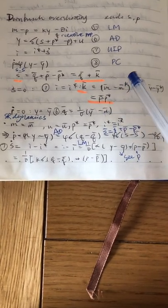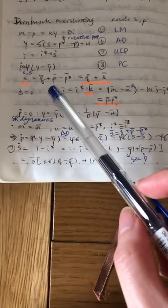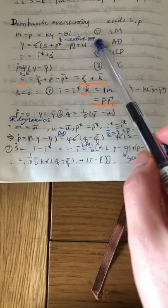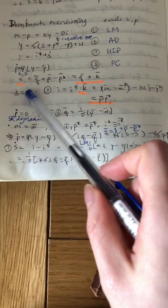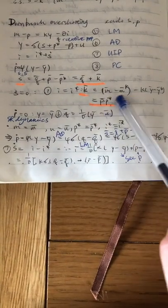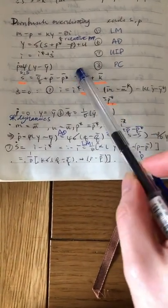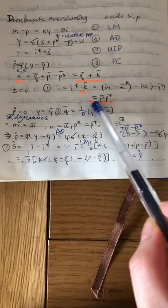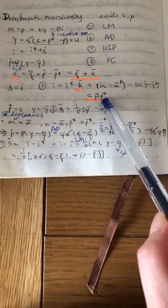And from our UIP, sorry, the PPP equation, then since we have this, this is the equilibrium quantity of S and that is the equilibrium quantity of P.